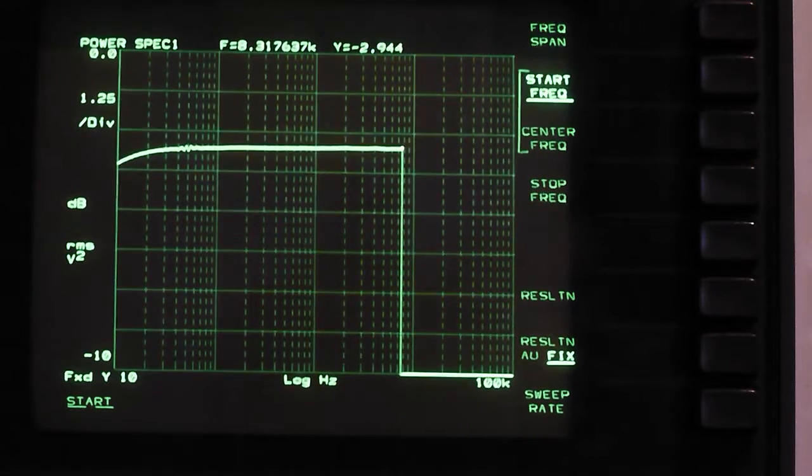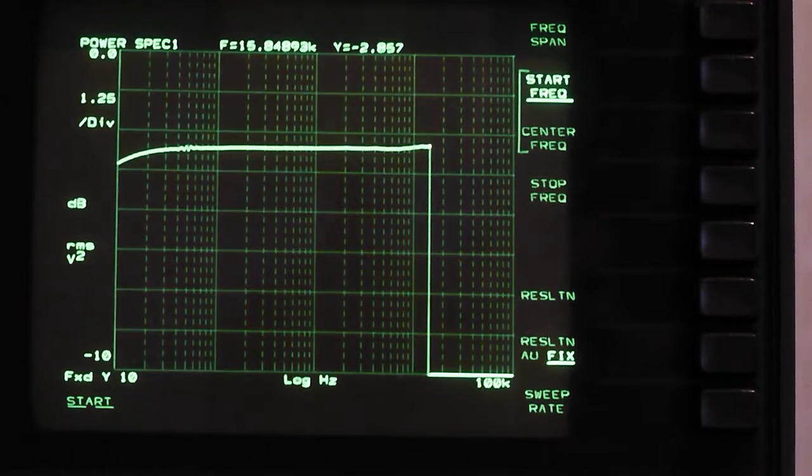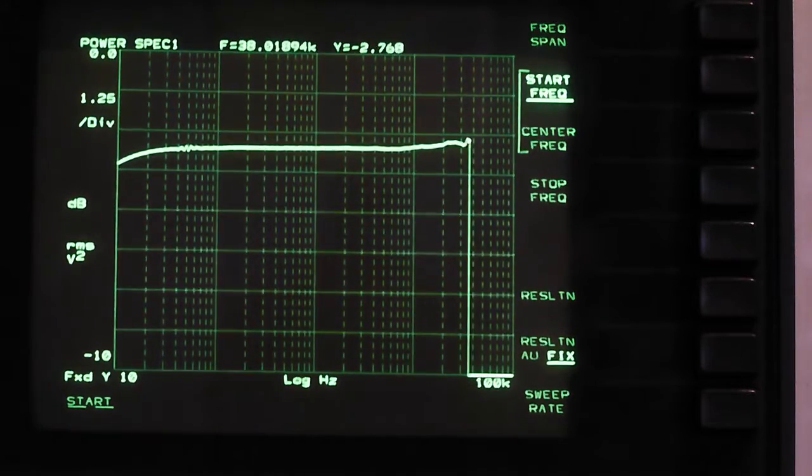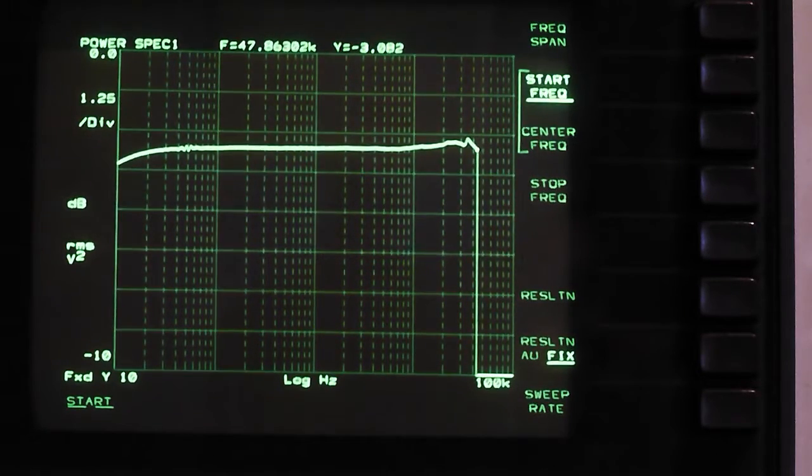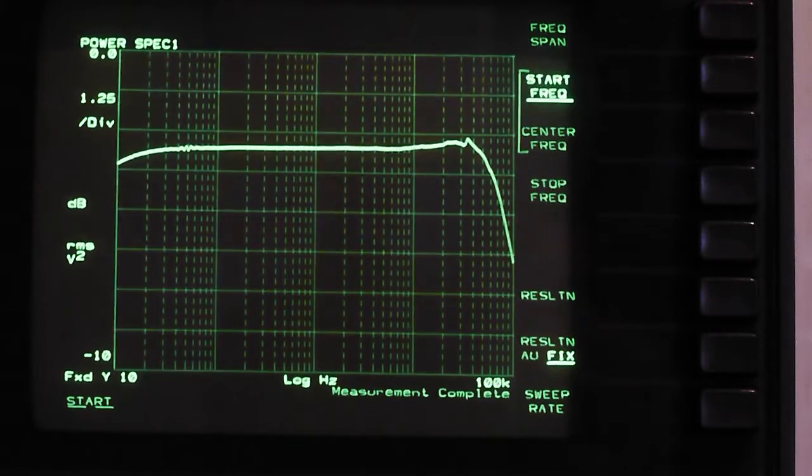Similar sort of y-axis scaling to the previous test. So we have... oh that's interesting. We're getting just a fairly slight rise at the top end. That's fascinating. Once again though, it's not huge when you consider that we're dealing with 1.25 dB per division.